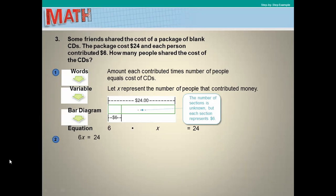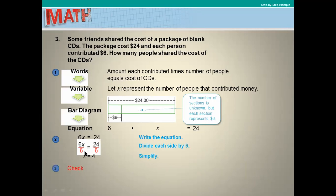Divide both sides by 6 to kick out the coefficient beside x. So x equals 4. To check: 6 times 4 equals 24, which matches, so the answer is correct — 4 people shared the cost.